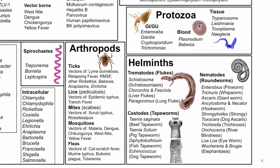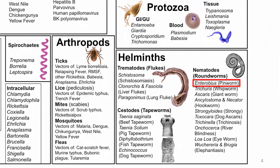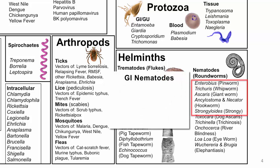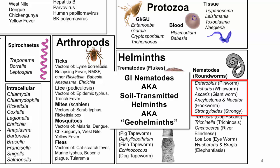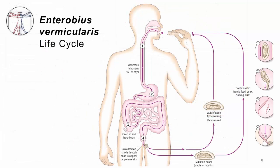Here's our tree of life and pathogens in the course. We're at the top of the nematode, or roundworm, section. Enterobius is the simplest of what we call the GI nematodes, also called soil-transmitted helminths or geohelminths, for reasons that will become clear as we go through these worms one by one.